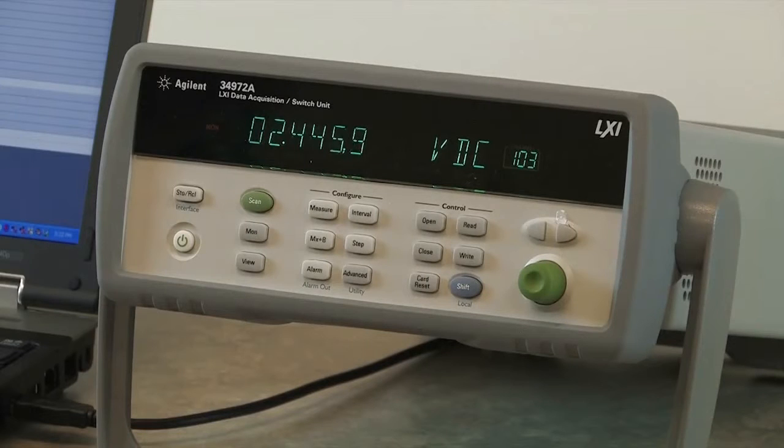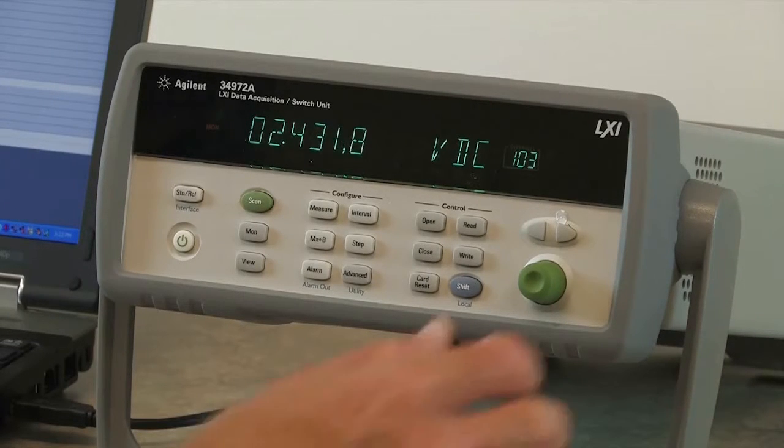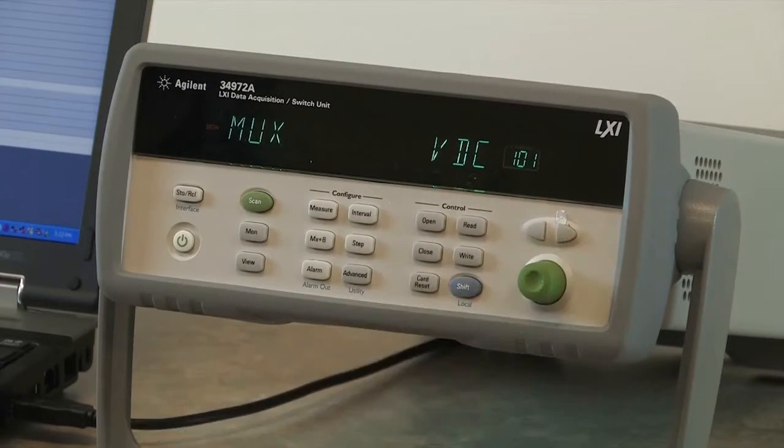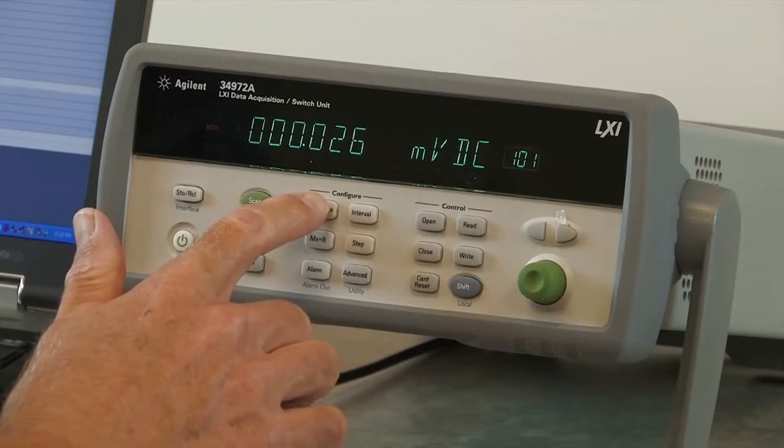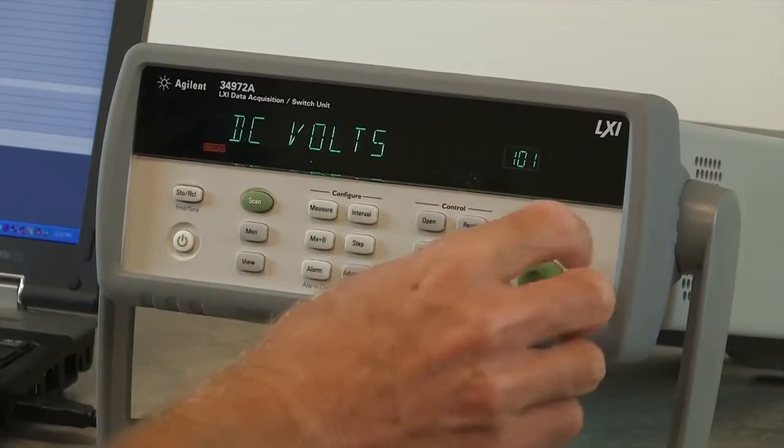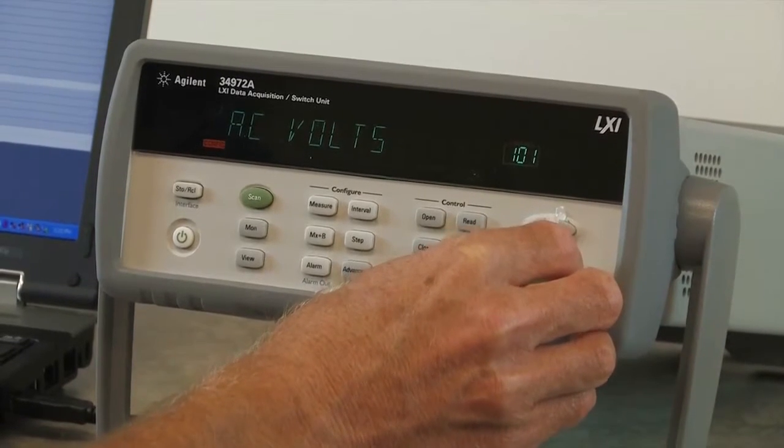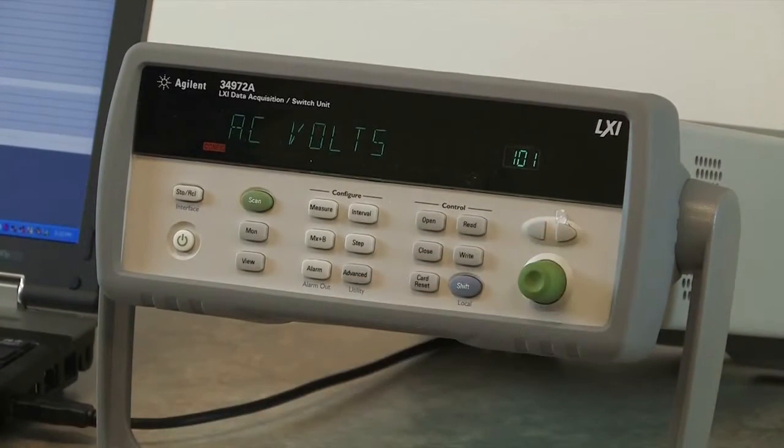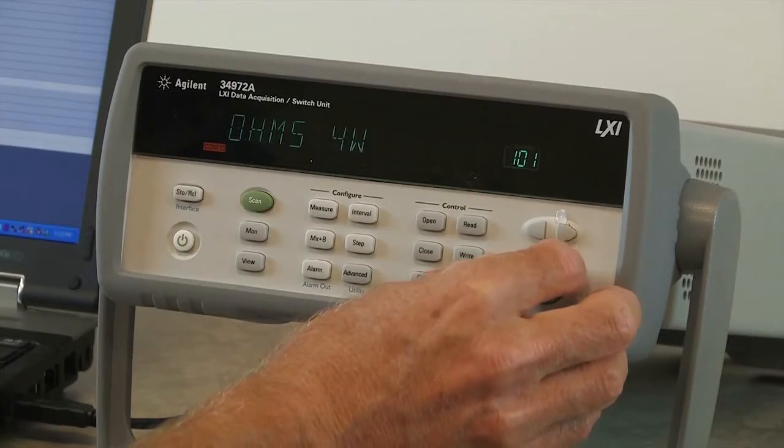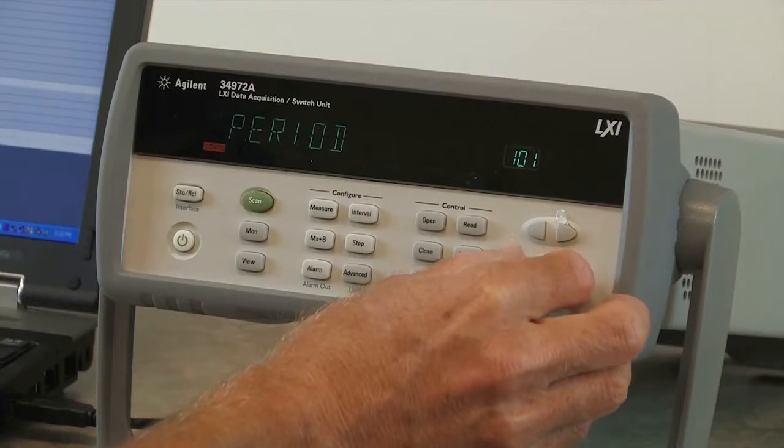The first thing we want to do is set up our first channel, which we connected our thermistor to. So I'm going to configure that channel. The 34972 uses universal channels, so you can hook up your DUT or sensor to any channel, and then you select the type of voltage or resistance that you have connected to it.